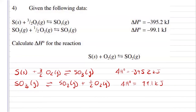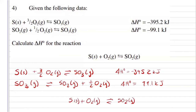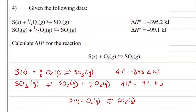Now, I can see what species are going to cancel. I have sulfur trioxide on opposite sides, so those will cancel. For the oxygens, well, I have a half, and on this side, I have three halves. So, three halves minus one half is two over two, so it's just going to give me that one oxygen that I need. Writing everything else that I have left over, I have my solid sulfur, one mole of oxygen gas, and sulfur dioxide, which is exactly what we wanted. Adding my enthalpies together, I get an enthalpy for the reaction of negative 296.1 kilojoules.